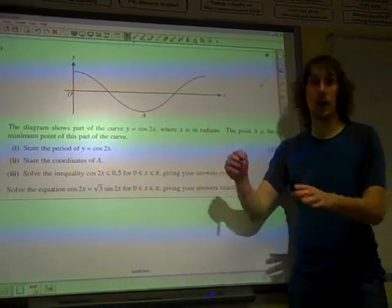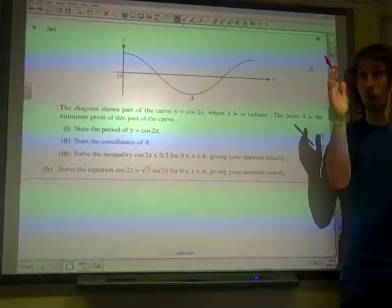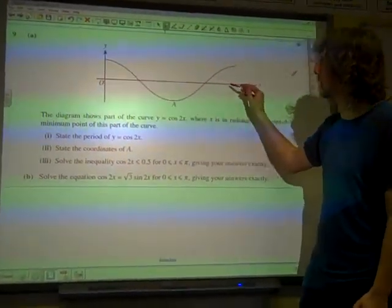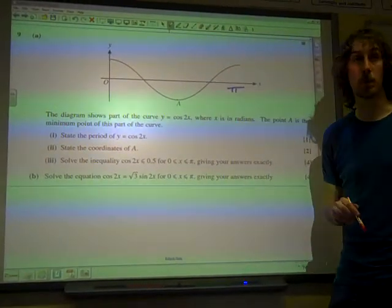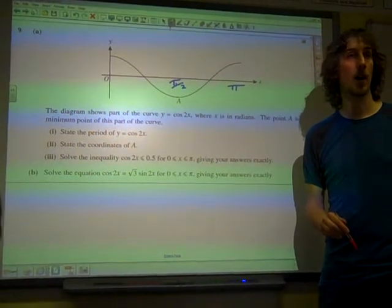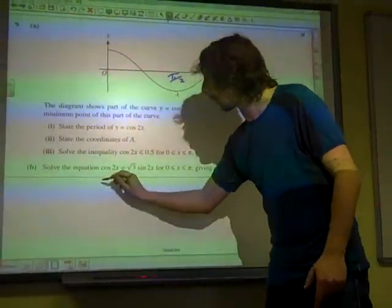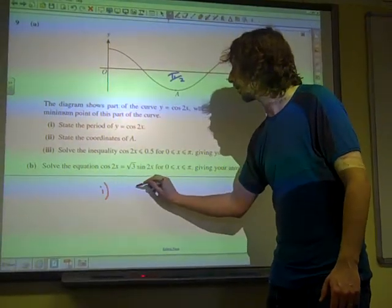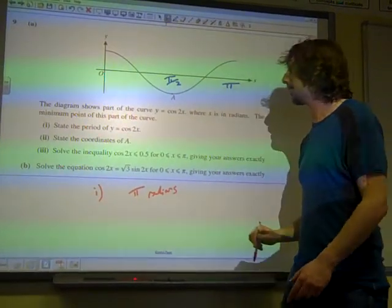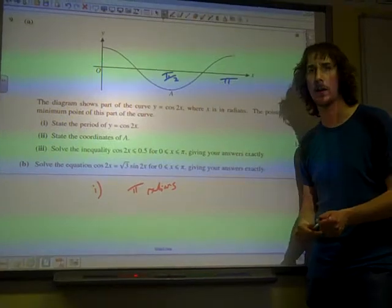So instead of going from 0 up to 360, or 0 to 2π, if everything is squashed in, we must have this point being 0, this point is π instead of 2π. And this point here must be π by 2, halfway along. So the period of cos(2x), the answer to part i, is π radians, or 180 degrees. But we're working in radians, so we need to give our answer in radians.